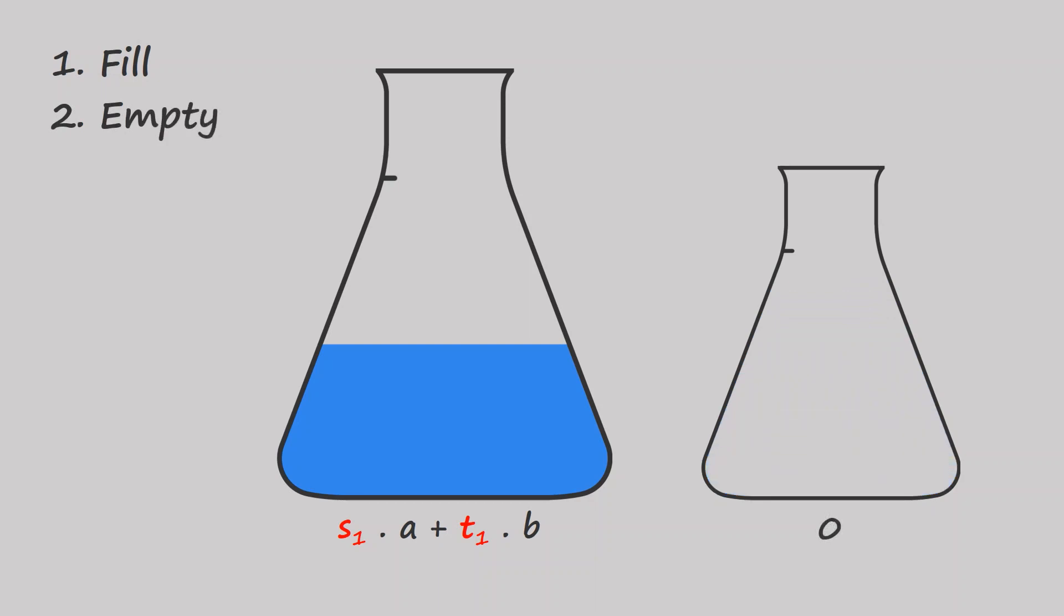It's obvious why the filling and emptying actions will not change that property. But what about the pouring action? There are two ways to pour water in this puzzle. The first is when you pour till the flask you're pouring from becomes empty. And the other way is when you pour till the flask you're pouring into becomes full, while there's still water in the flask you poured from.